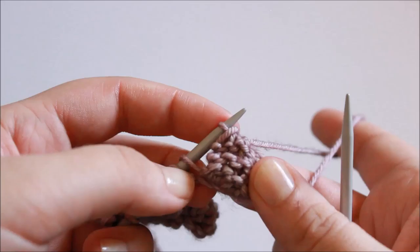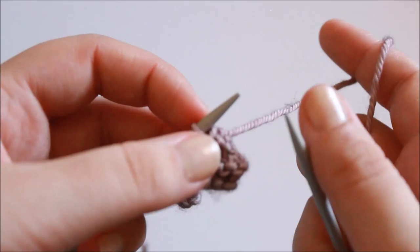Then again with the fourth stitch, bring it up and over, and last one, the fifth stitch, up and over. What that's done has started to curl our bobble around so it actually makes a sort of ball shape.